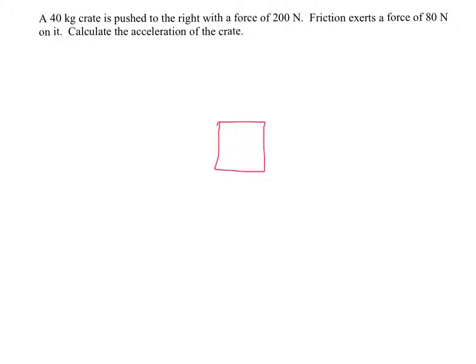So the crate has a mass of 40 kilograms, so right away we know there's a weight, and that weight is going to be 400 newtons, because again, 40 kilograms times g, which is 10, that tells us the weight.